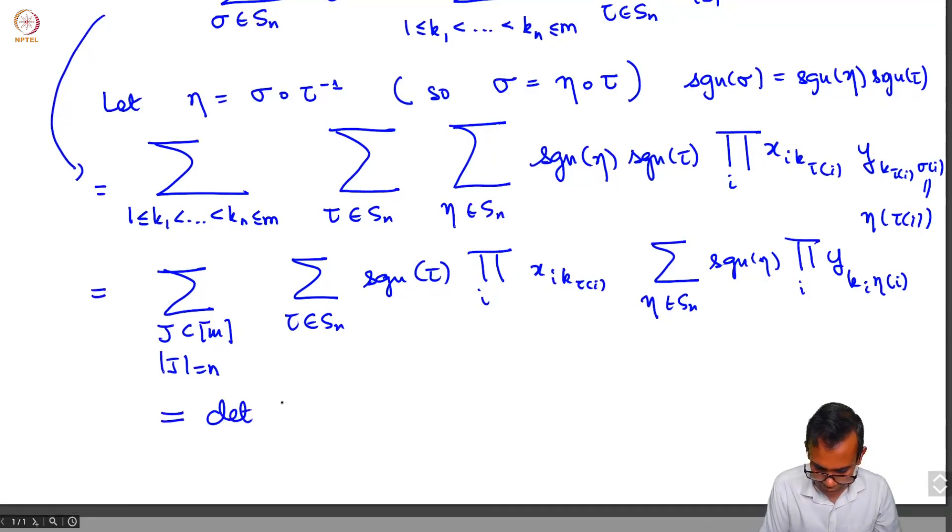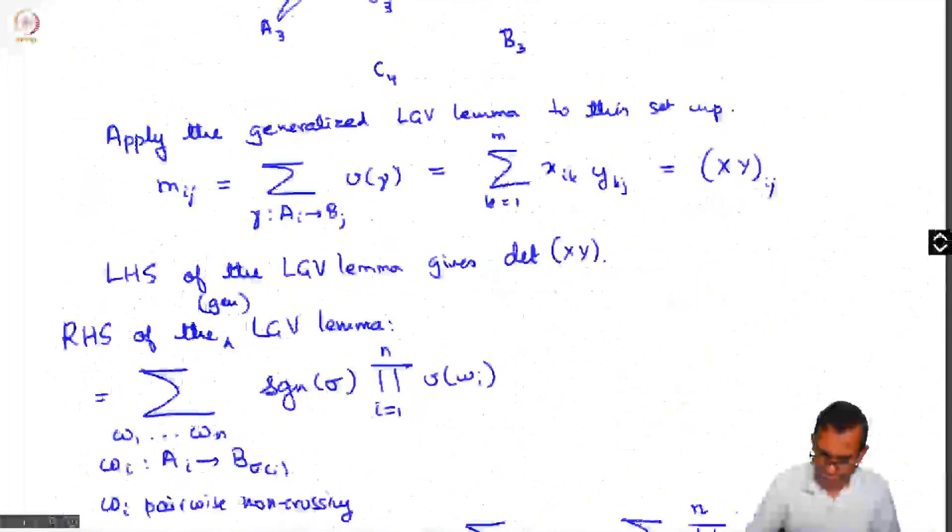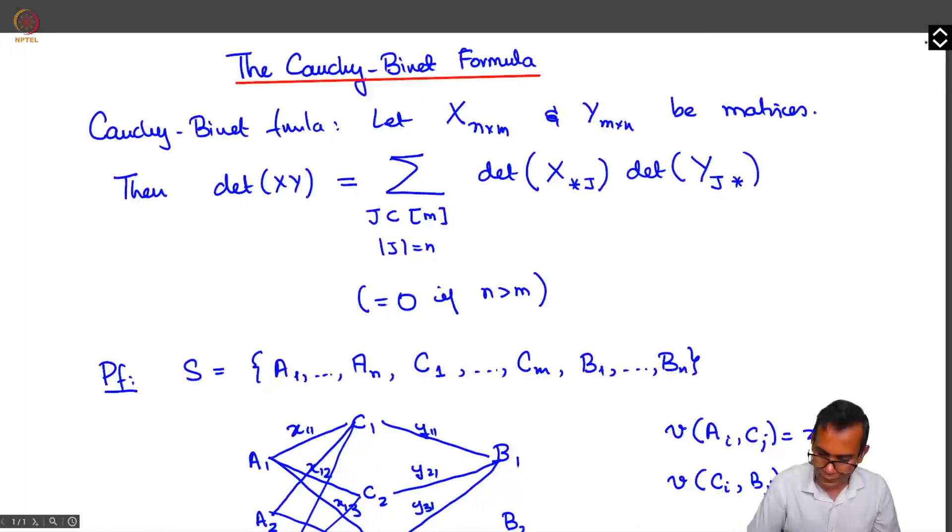But that is nothing but sum over j, determinant of x star j times determinant of y j star, as claimed in the Cauchy-Binet formula.